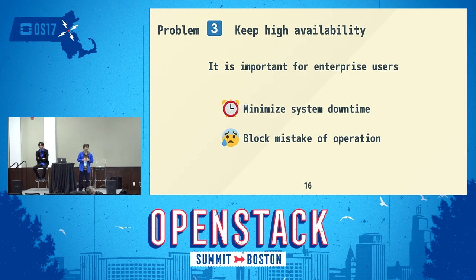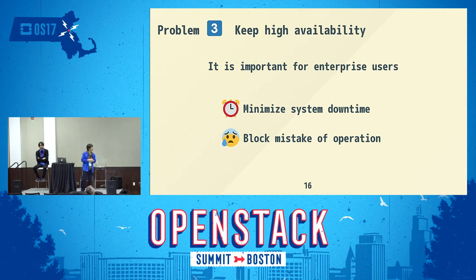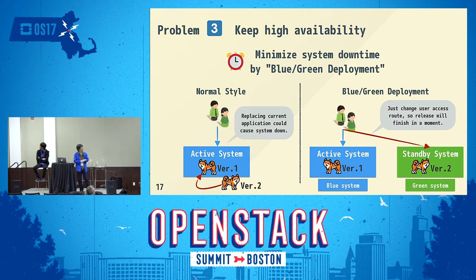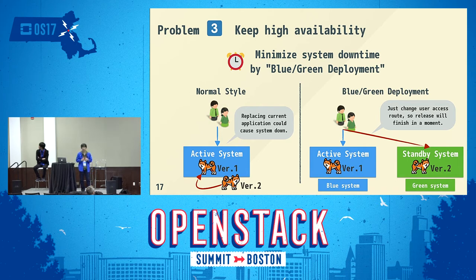The third problem is how to keep high availability of our GUI. Since this service targets enterprise customers, it is really important to keep high availability. To consider high availability, we need to address two aspects: first, we need to minimize system downtime even with frequent software releases; and second, we need to block mistake operations. To minimize system downtime, we are using the blue-green deployment technique. Blue-green is a software release technique used to minimize system downtime and ease system rollback.